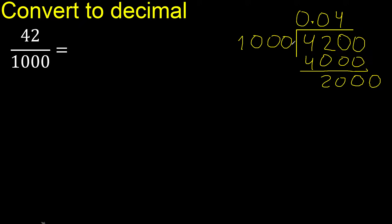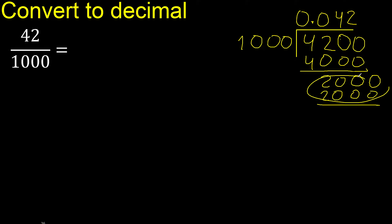Is here. 1000 multiplied by which number? Multiplied by 2 is 2000, here. Subtract 0. 0, therefore finish.